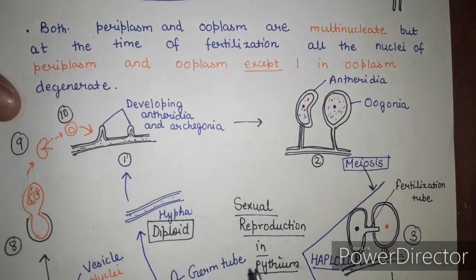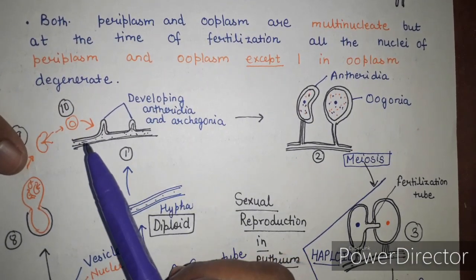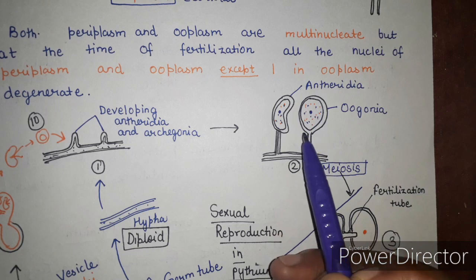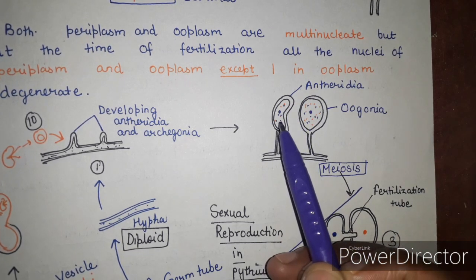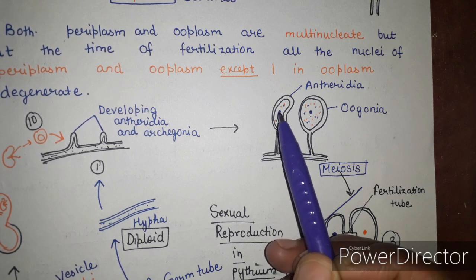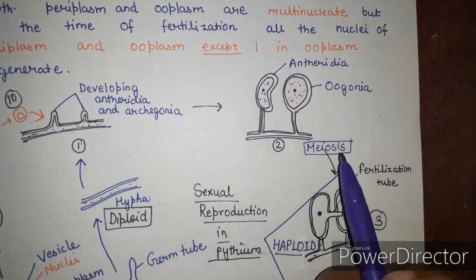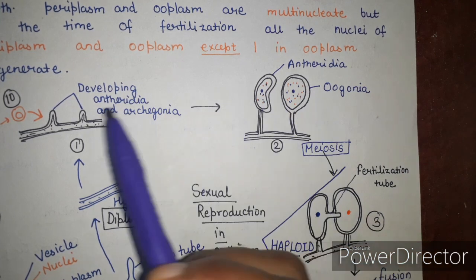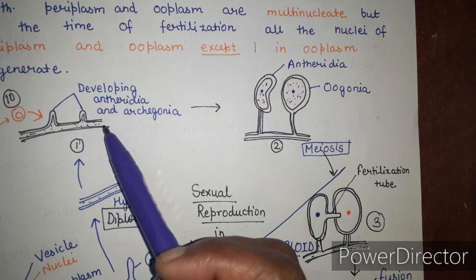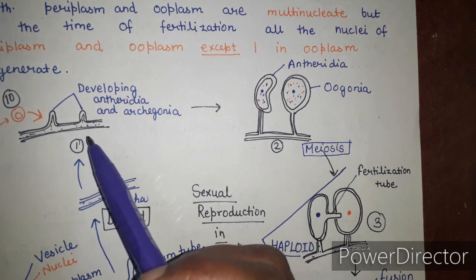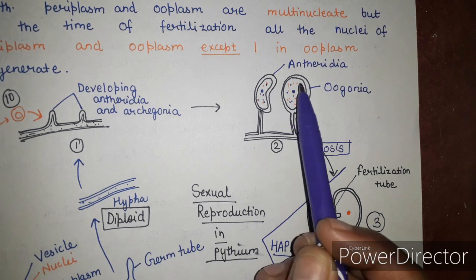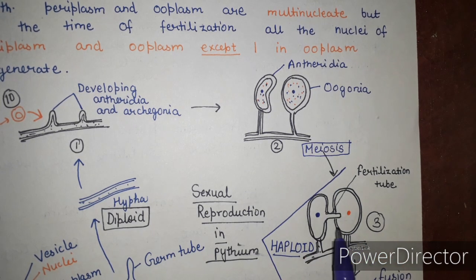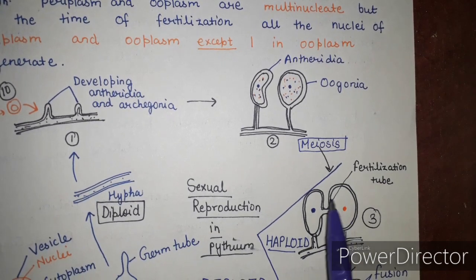During sexual reproduction, first there is development of anthridia and oogonia — club-shaped and globular structures respectively. The hyphae of Pythium are diploid in nature. During formation of anthridia and oogonia, the diploid nuclei undergo meiosis to form haploid nuclei — this is the haploid stage in the life cycle of Pythium.